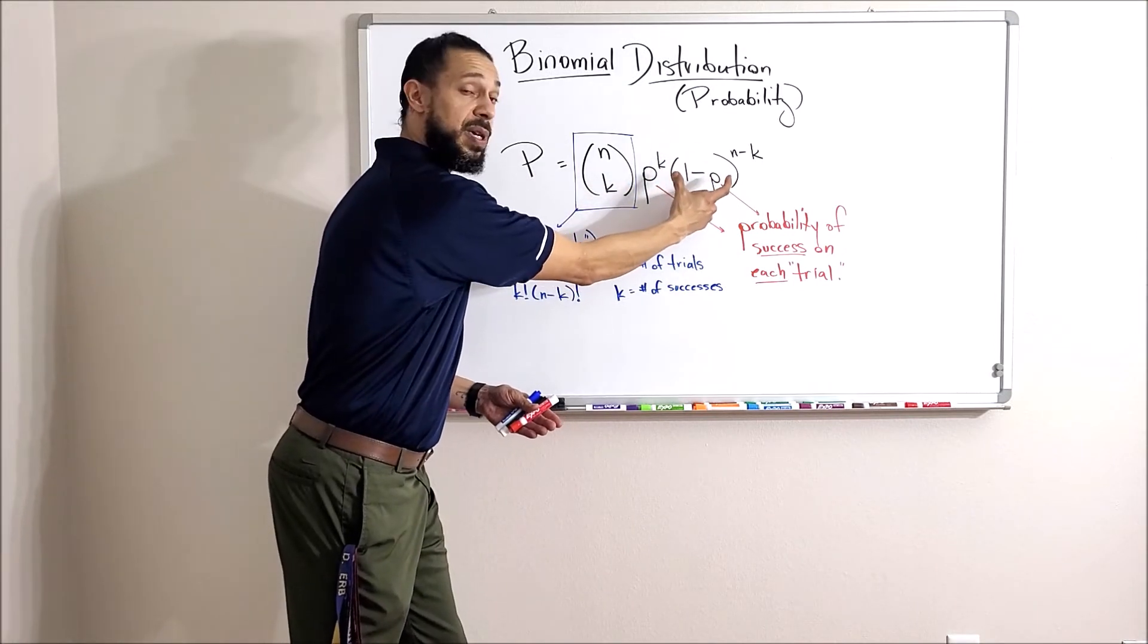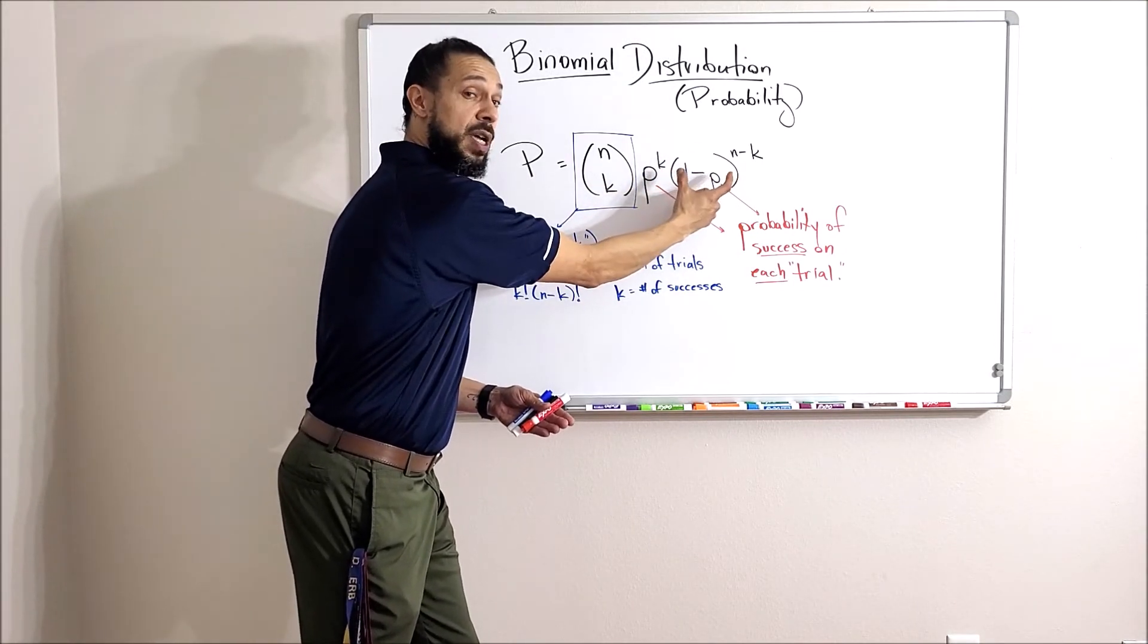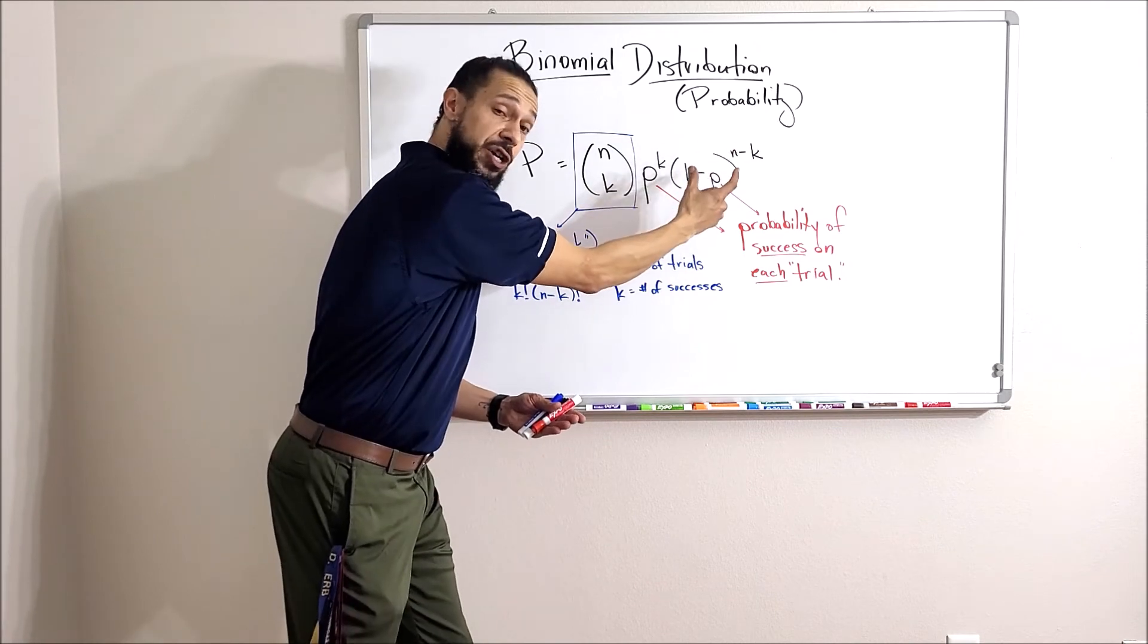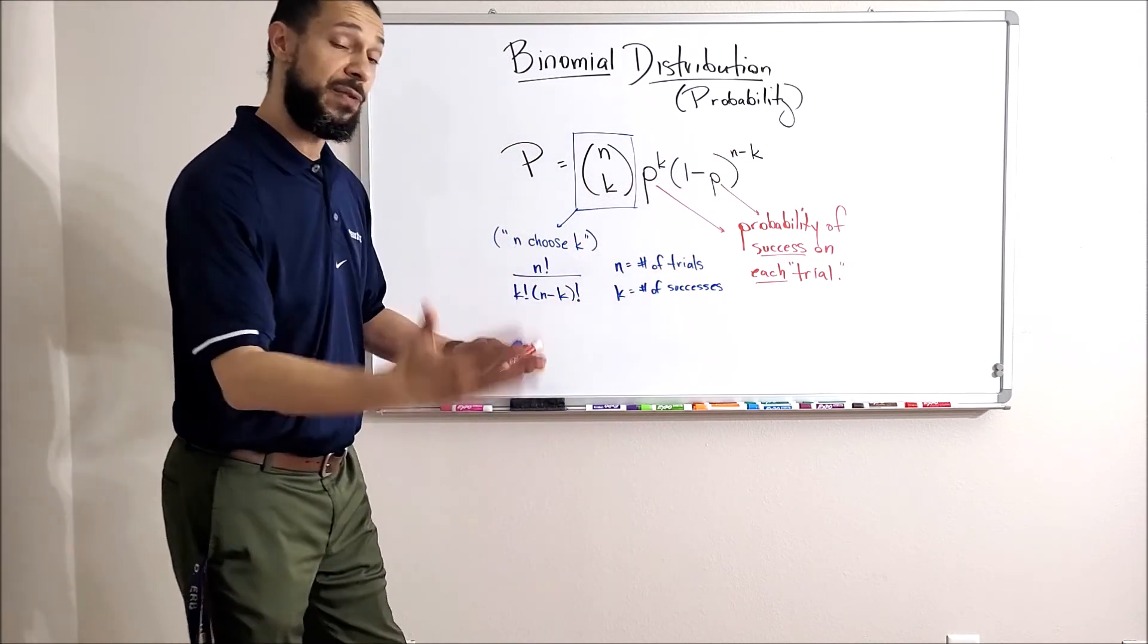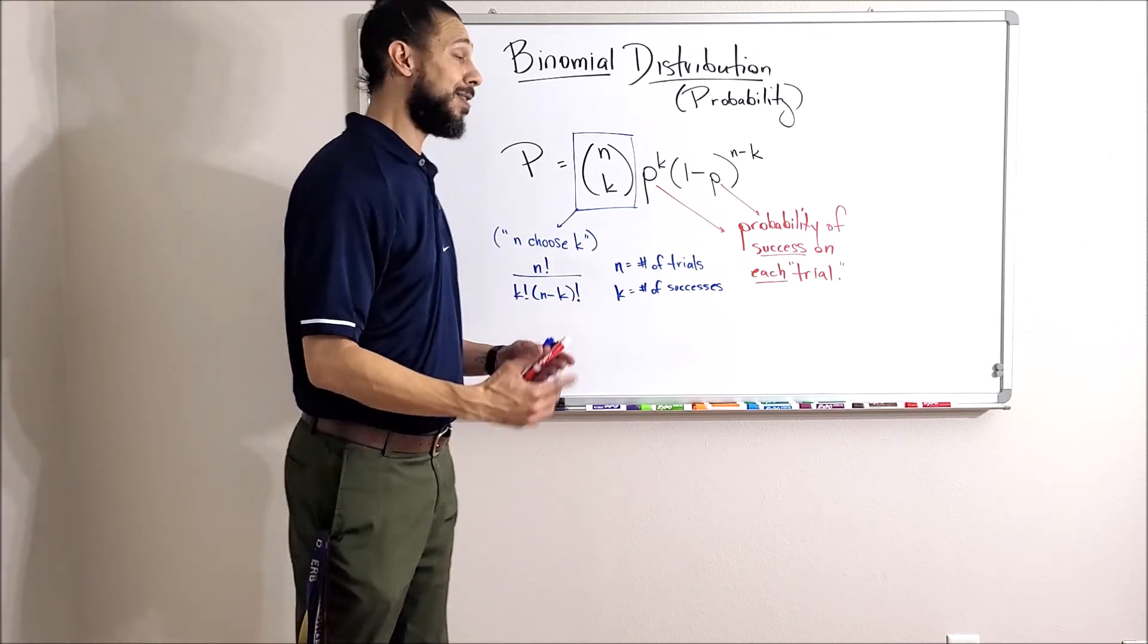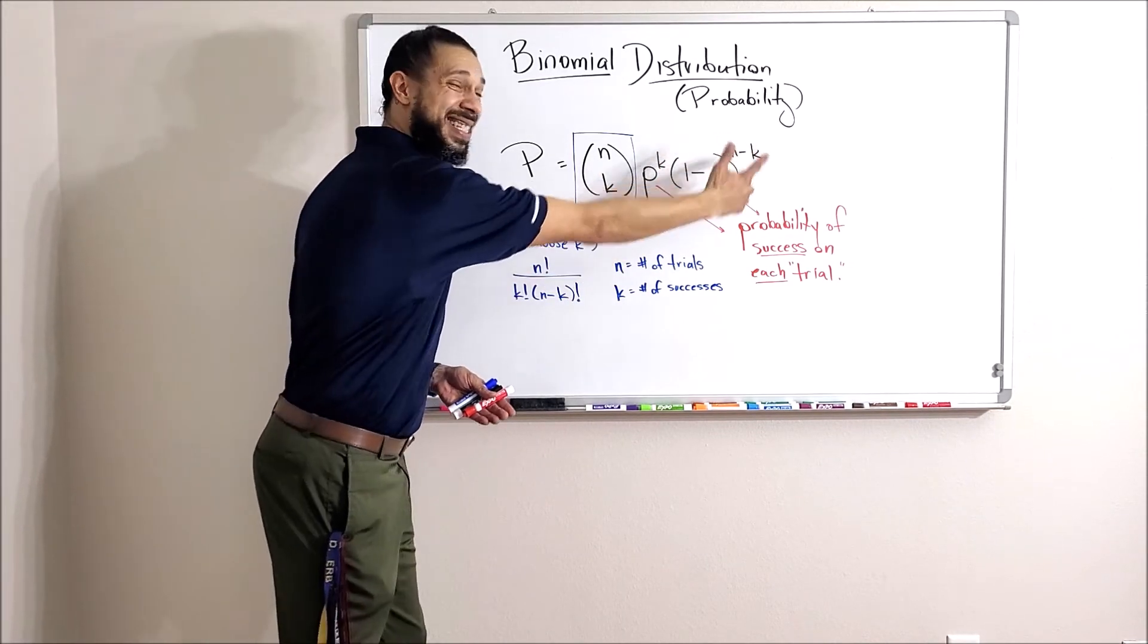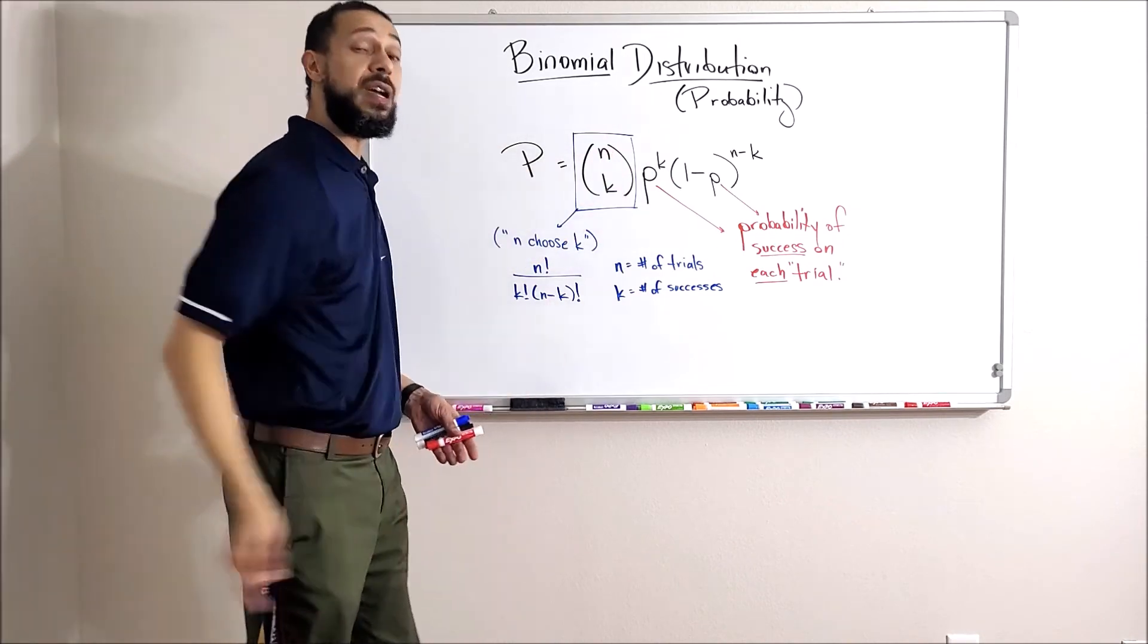Notice here in the parentheses it says 1 minus p. When I take all of that together, that would be the probability of failure, because the probability of success plus the probability of failure has to add to 1. These k's and n's are the same numbers as you're using here.